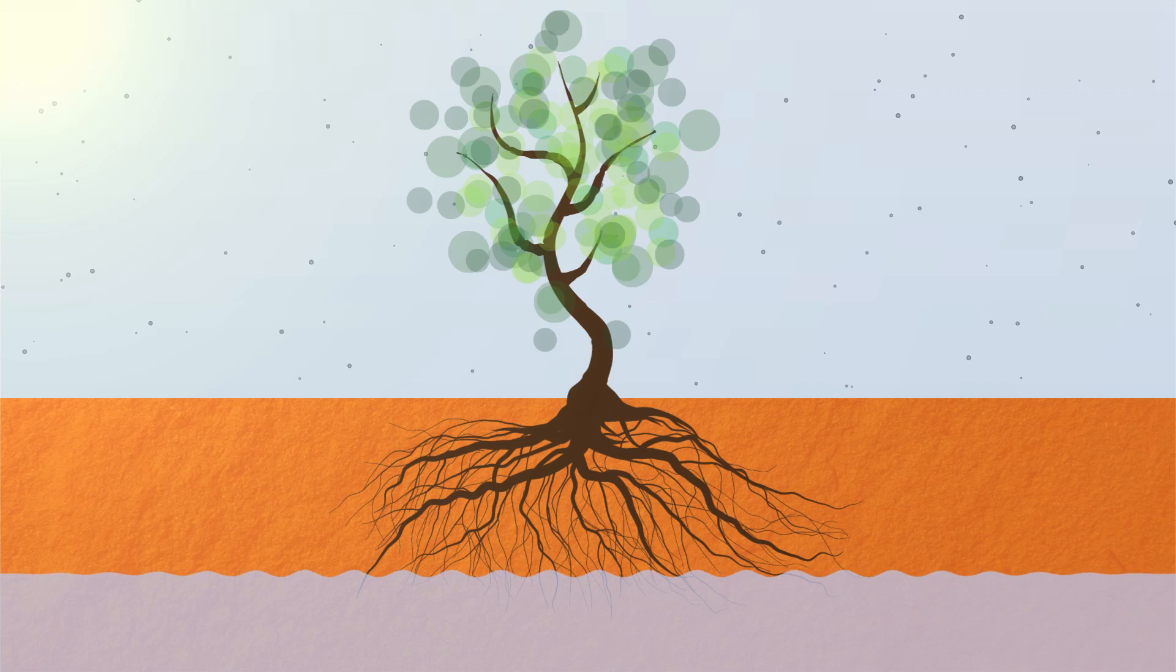Plants absorb water from the soil, often going to great lengths to find it. But they get carbon dioxide from the air, and carbon dioxide exists at pretty low concentrations.